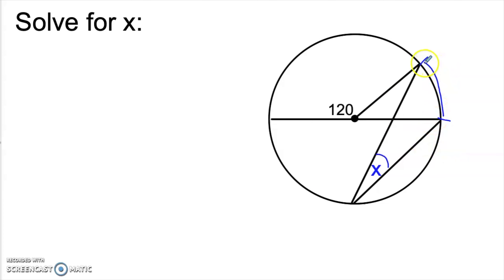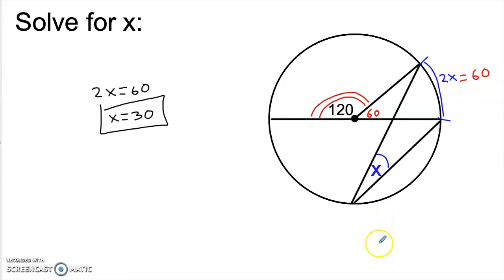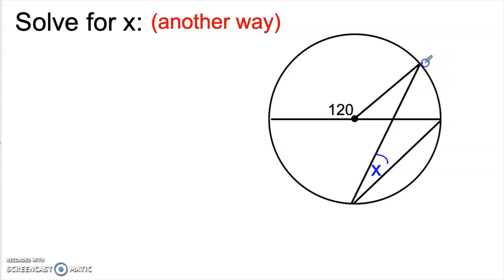So let's first identify the intercepted arc. If we follow those two chords out and imagine that this angle bit down like a mouth, this is the portion of the circle that would get chopped off — that means that this is the intercepted arc for this angle. And since it's an inscribed angle, the intercepted arc has to be double. If this angle is 120 degrees, then since this is a straight line, this angle over here has to be 60 degrees. And isn't that 60 degree angle a central angle? It's formed by these two radii and intercepts this very same arc. That means this intercepted arc is also 60, so 2x equals 60 and x equals 30.